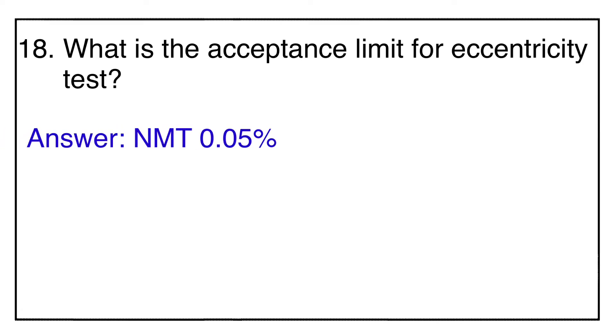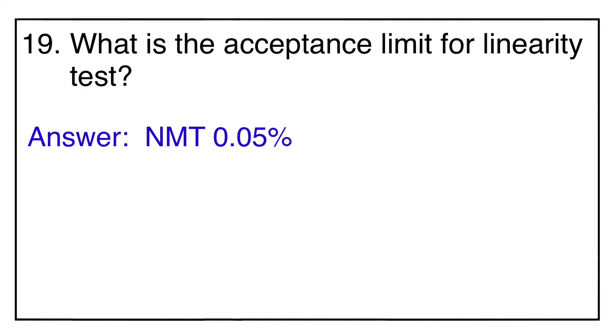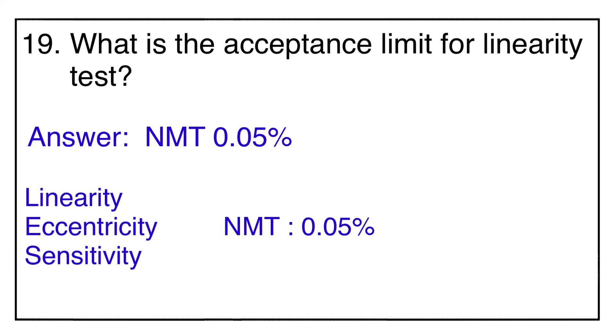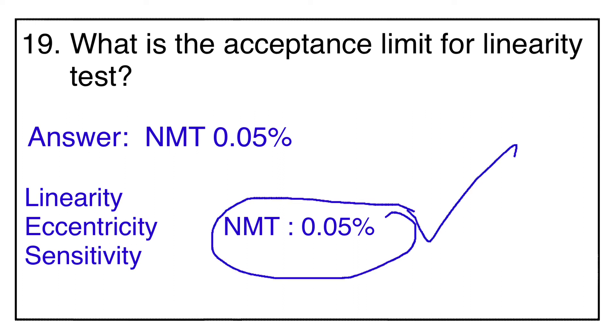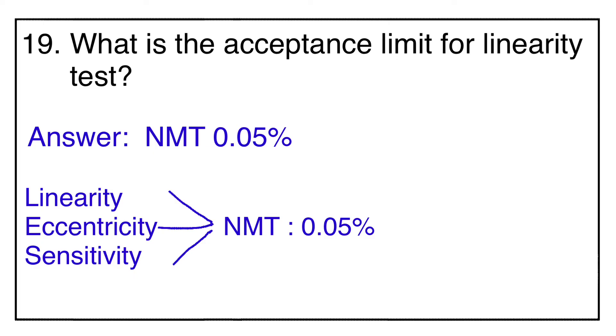Question number eighteen: the acceptance limit for the eccentricity test is not more than 0.05%. Question number nineteen: the acceptance limit for the linearity test is also not more than 0.05%. An important point to remember is that for linearity, eccentricity, and sensitivity tests, the acceptance limit is the same — not more than 0.05%.